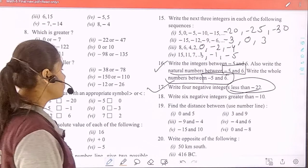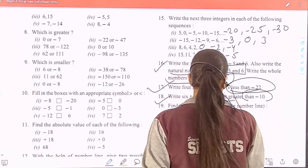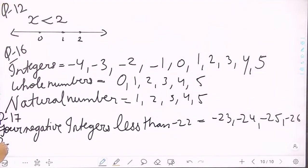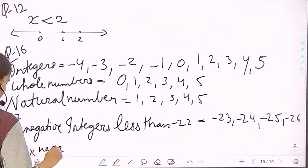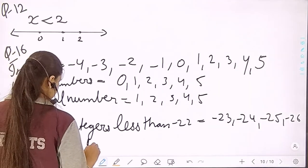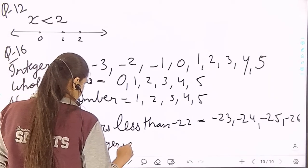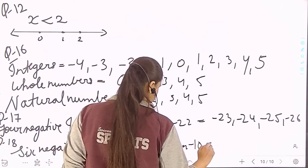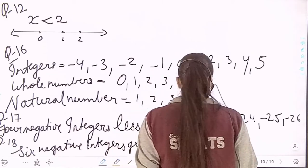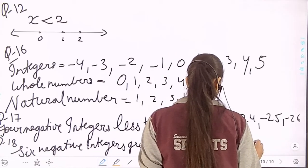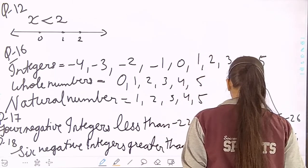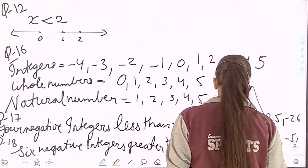Question 18: write 6 negative integers greater than minus 10. The six negative integers greater than minus 10 are: minus 9, minus 8, minus 7, minus 6, minus 5, and minus 4.